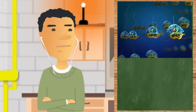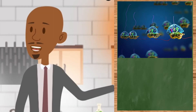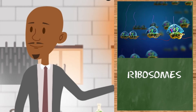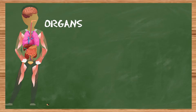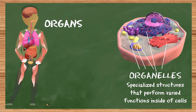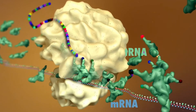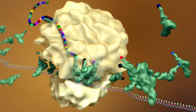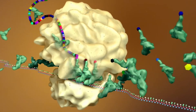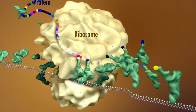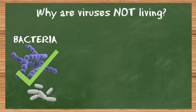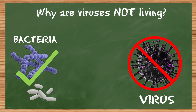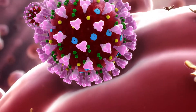But there's one problem — coronavirus doesn't have ribosomes. Ribosomes are an organelle; just like you have organs, your cells have organelles. Ribosomes are very important because they decode your genetic material to make proteins — the building blocks that control everything physical about us. Bacteria have ribosomes too, but viruses don't; they need to hijack your cells to replicate.